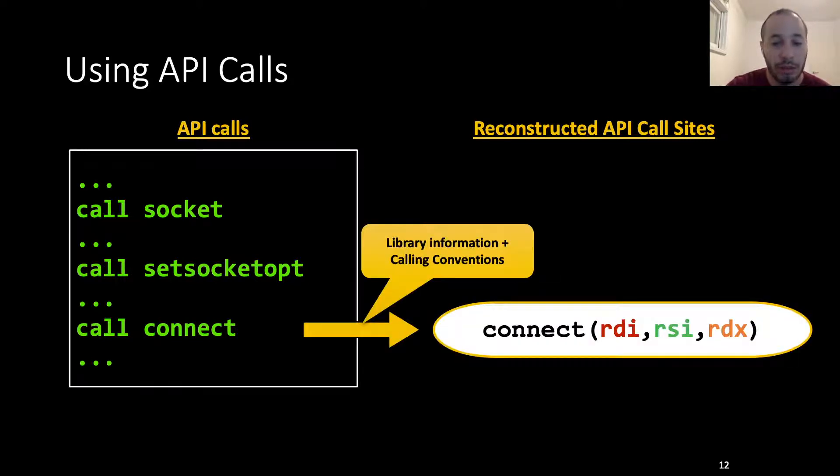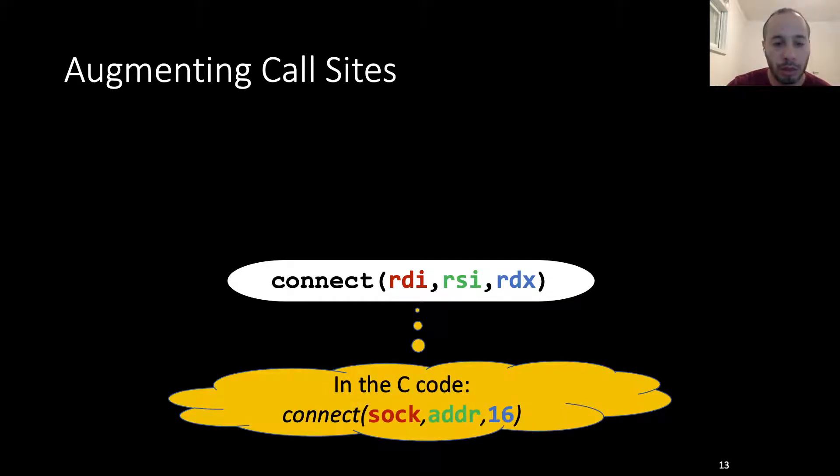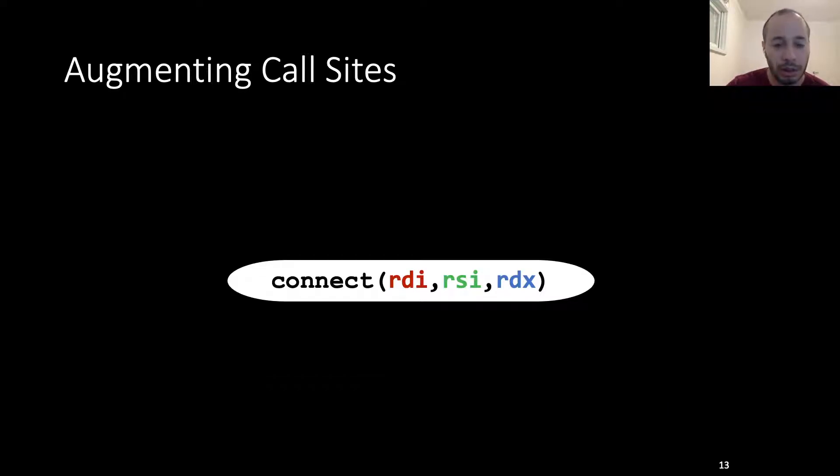We will reconstruct a call site for each API call. We will use the library information to ascertain the number of arguments being used at the call, and the calling convention to understand which registers are used to pass these arguments. After reconstructing the call sites, we remind ourselves that in the original C code, there was a lot more information. There were the names of the variables being used and some concrete values. While the names of the variables cannot be reconstructed, we will use data flow analysis to reason about the registered values at the time of the call.